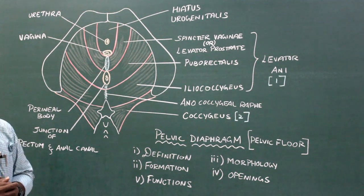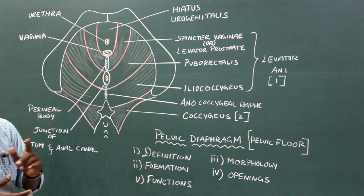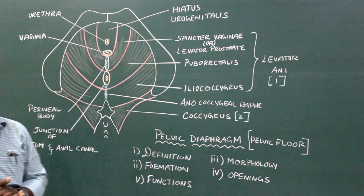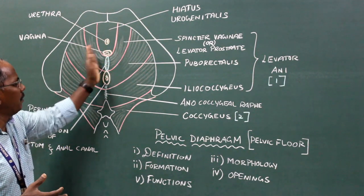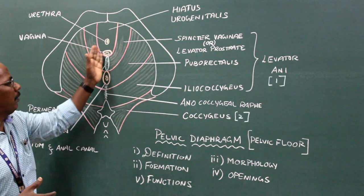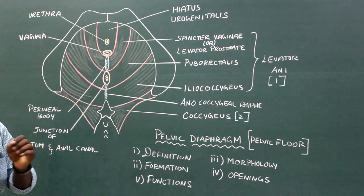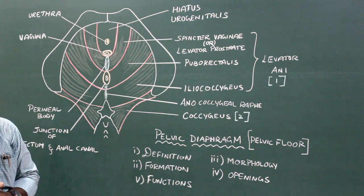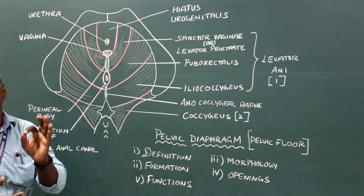Openings of pelvic diaphragm: number one, hiatus urogenitalis — it is a gap between the two levator ani muscles which allows passage for vagina and urethra in the female and urethra in the male.